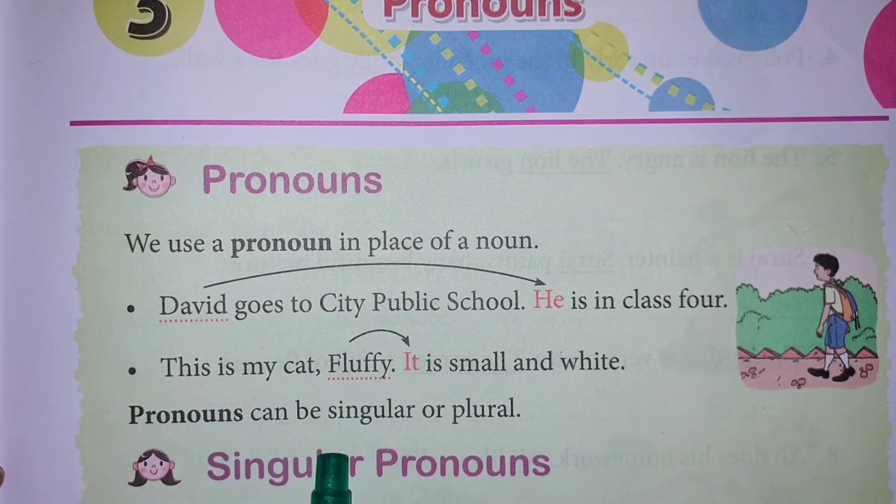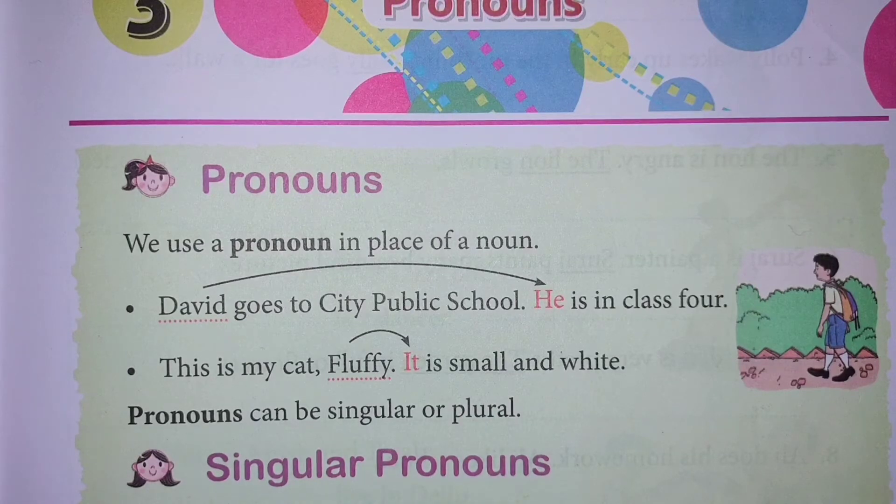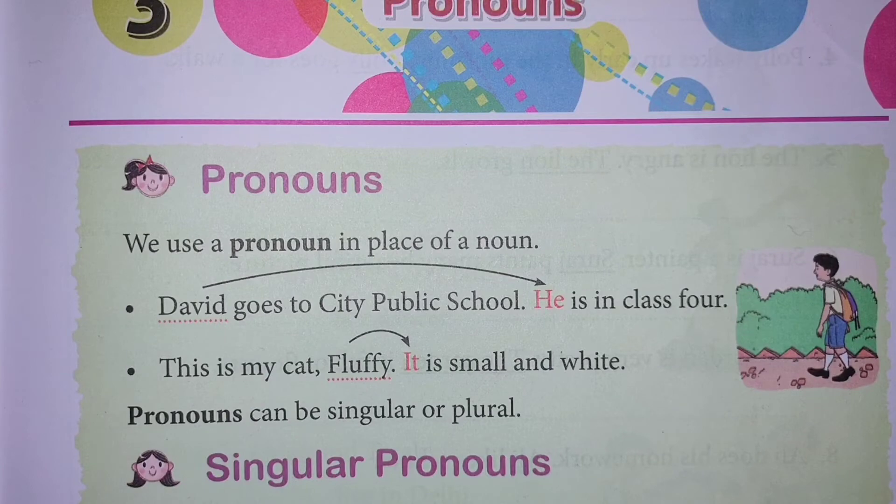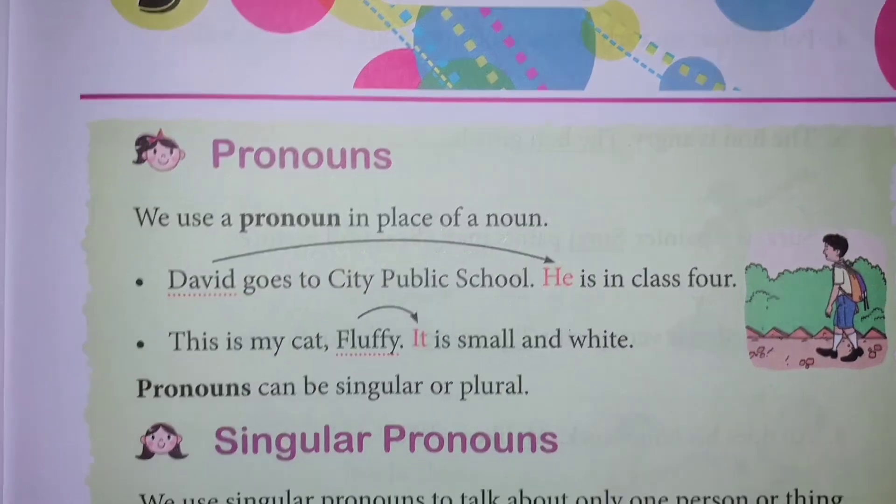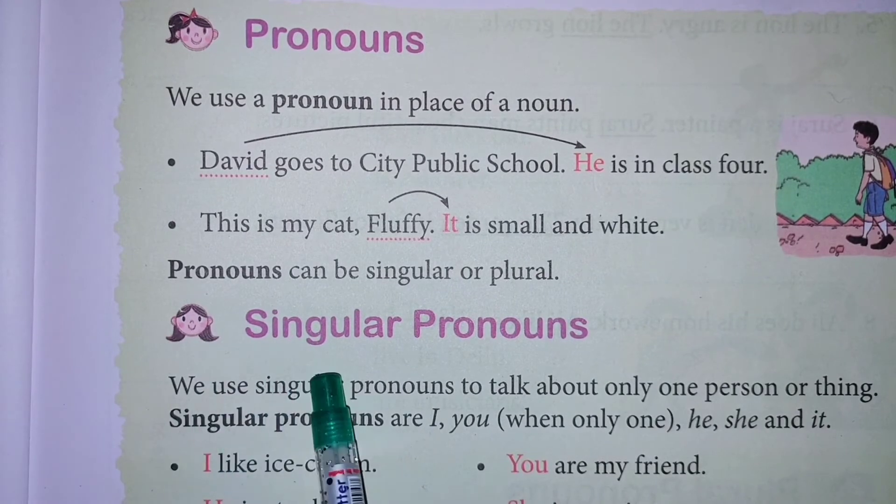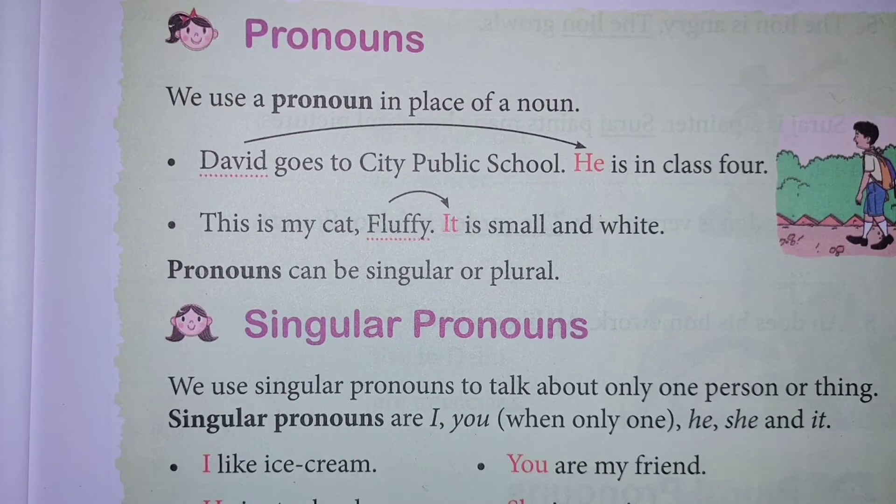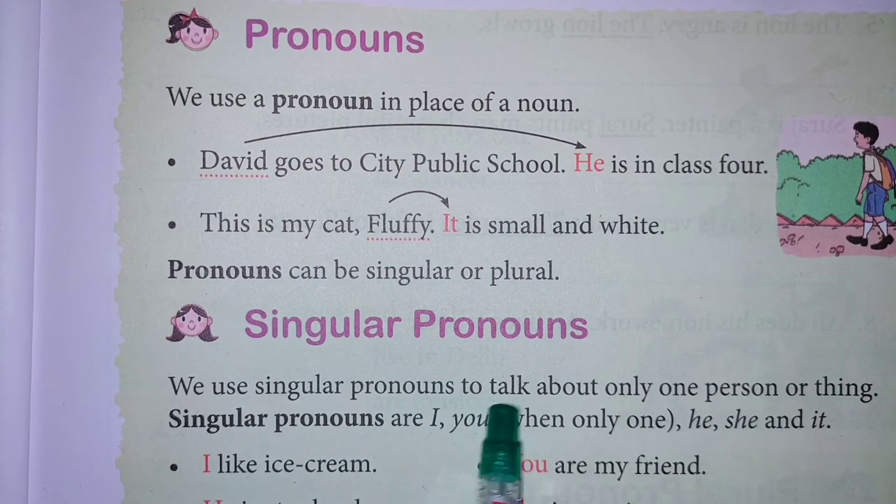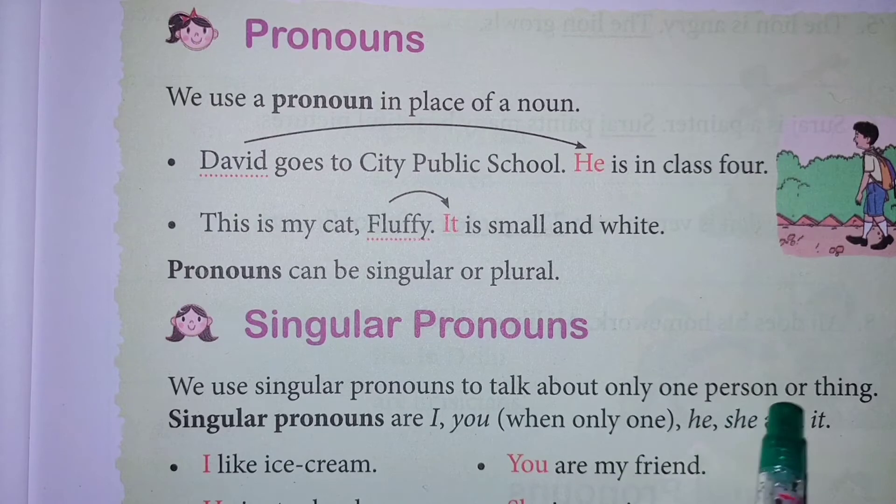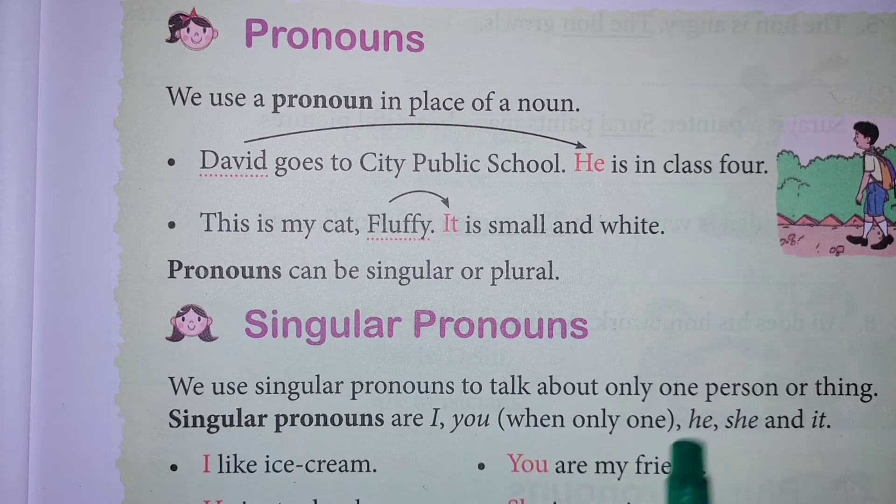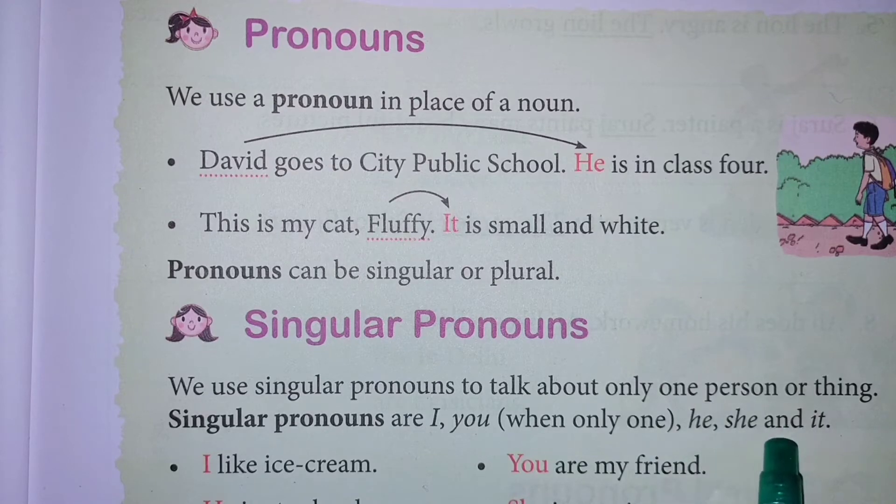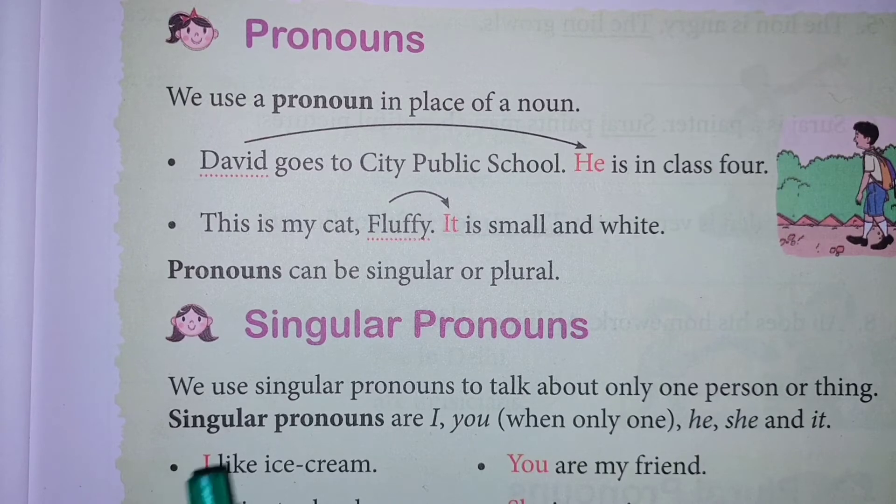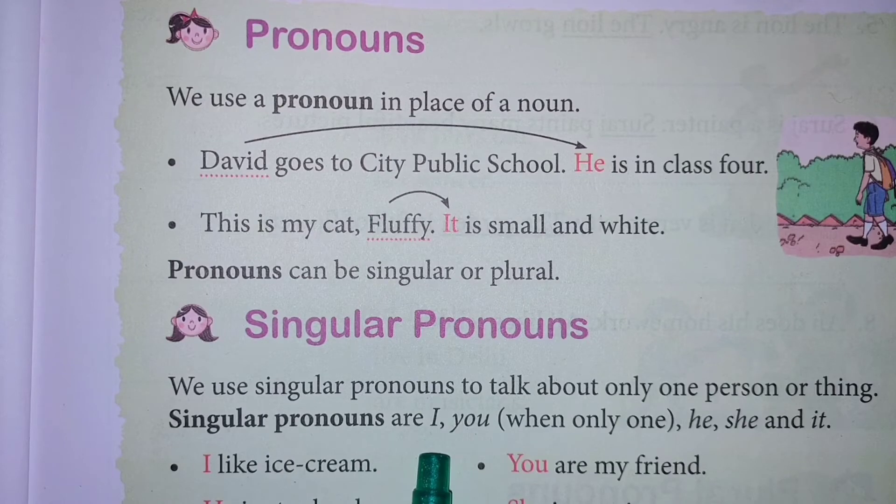Pronouns can be singular or plural. First the topic is singular pronoun. We use singular pronouns to talk about only one person or thing. Singular pronouns are I, you, he, she and it. I means moi, you means tumi, she means tai and it.